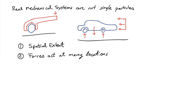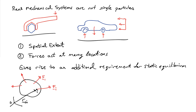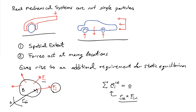This leads to an additional requirement for equilibrium. If I have a body B subjected to a number of forces — F1, F2, and a generic force Fi — there is one additional requirement: the sum of the moments acting on the body must also equal zero. The moment of a given force is defined as the cross product of the position vector from a reference point O to the location where the force is applied, crossed with the force itself.